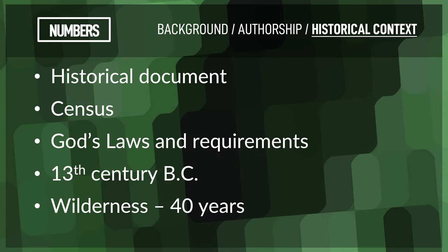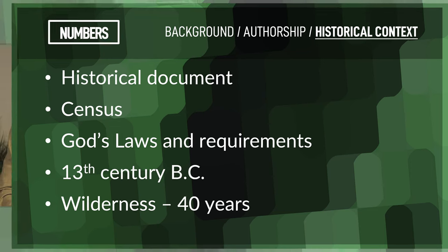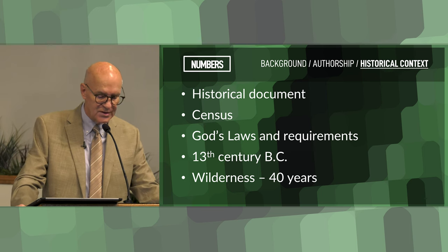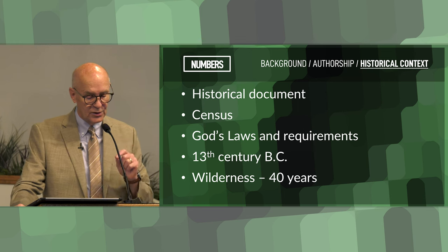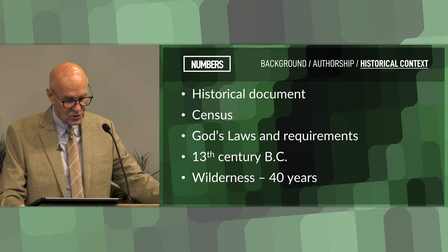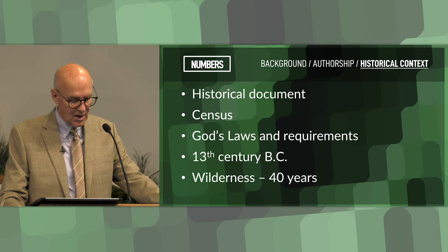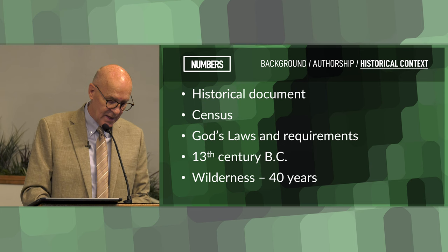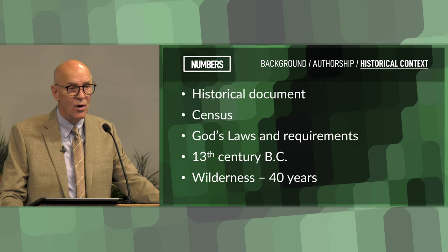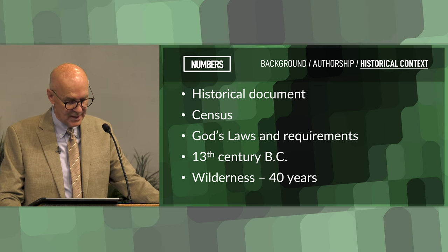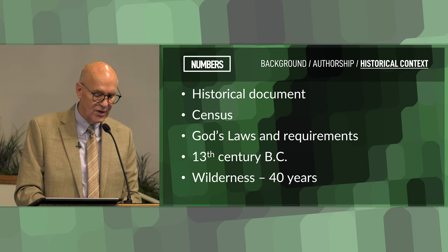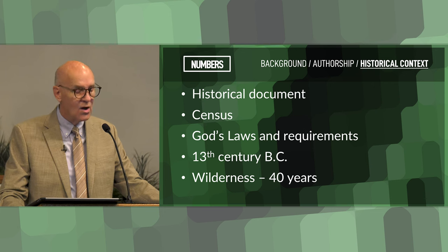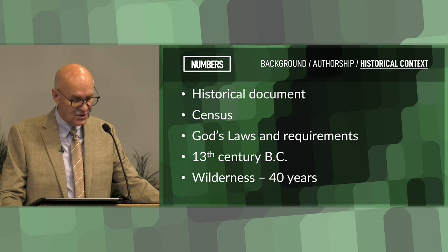As for historical context, Numbers is seen as a historical document providing a detailed account of the Israelites' experiences in the wilderness, including their travels, the battles they fought, the rebellions that took place, and the miraculous provisions of God. It also includes two censuses, laws, and instructions for worship and community life, reflecting God's covenantal relationship with Israel and His requirements for His chosen people. The events in Numbers are believed to have occurred in the late Bronze Age, roughly around the thirteenth century BC — a time when the Israelites, freed from slavery in Egypt under Moses, wandered in the wilderness for 40 years before entering the promised land.